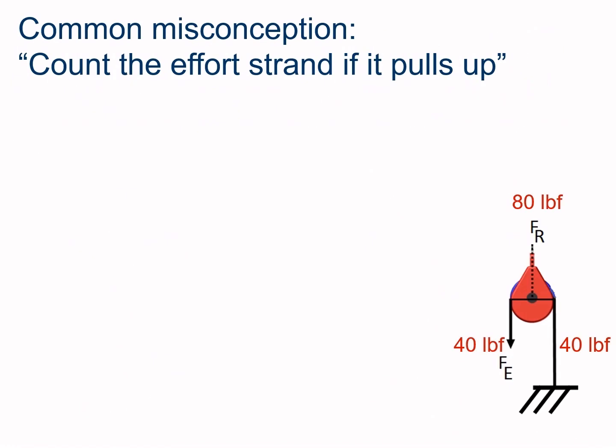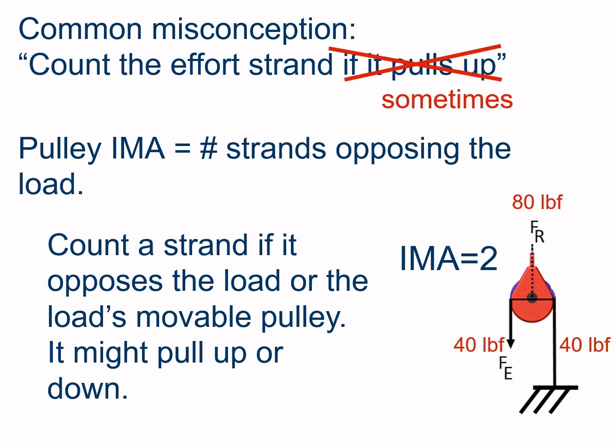Another common misconception: just count the effort strands if it pulls up. What if you're pulling downward? The pulley IMA equals the number of strands opposing the load — you count a strand if it opposes the load or the load's movable pulley, whether it's pulling up or down. Thank you for watching this video. I hope you learned more about the mechanical advantage — both ideal and actual — for wheels and axles, pulleys, and compound machines.